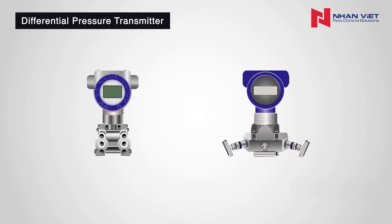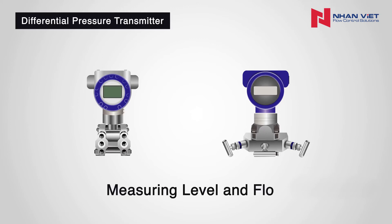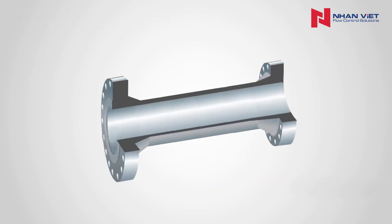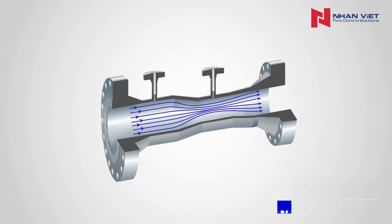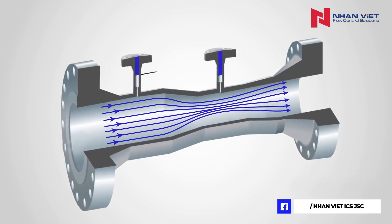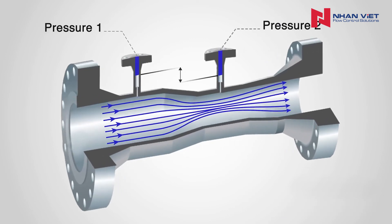Now that we know what pressure is and how a DP transmitter works, what is it used for? The most common applications are for measuring level and flow. Here, we'll discuss how a DP transmitter measures the flow of water in a pipe. One very common way of measuring flow using a DP transmitter is for the primary element to introduce a constriction in the pipe. Using a restrictive element on the primary side will create a high and low pressure. When the flow increases, more pressure drop is created. The secondary element will measure the difference in pressure created by the primary element.